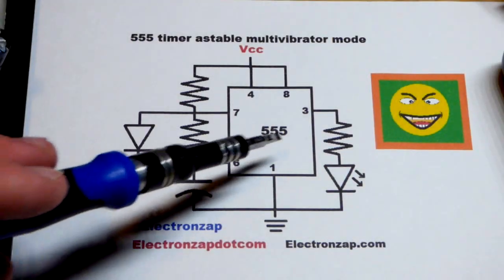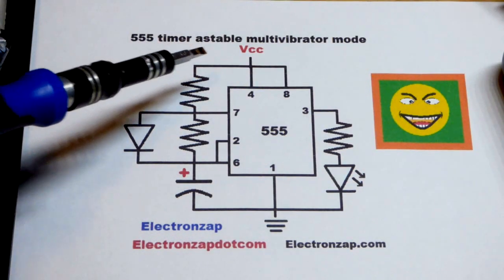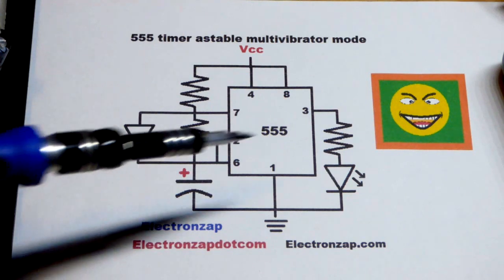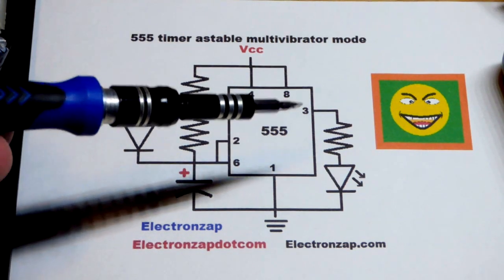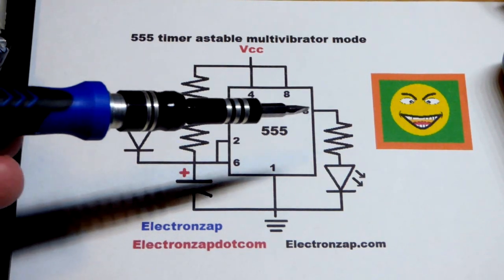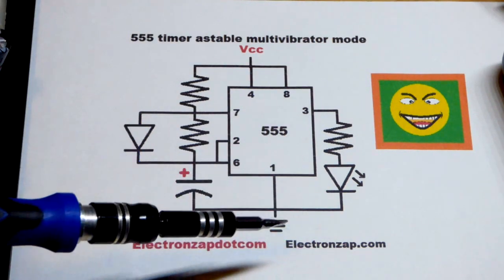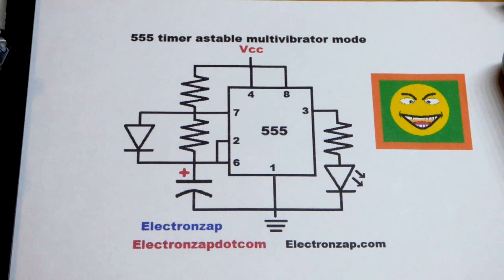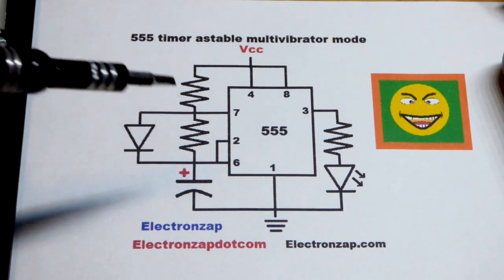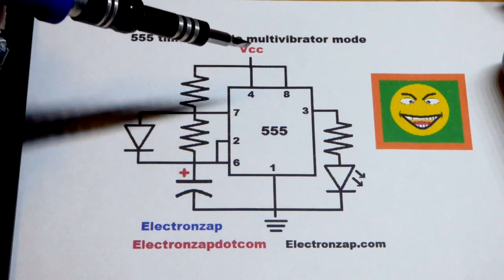So now in this video we're going to look at the 555 timer in astable mode. Astable means the output is never stable. It keeps going high and low. In this case the LED keeps turning on and off as long as power is applied. We're going to set the timing. I'm going to set it to about one second.